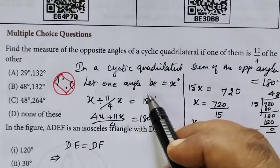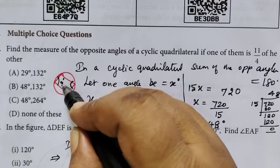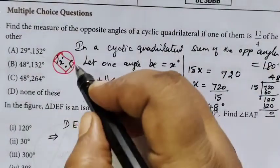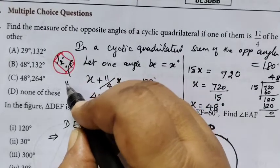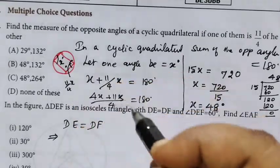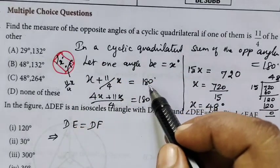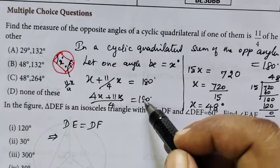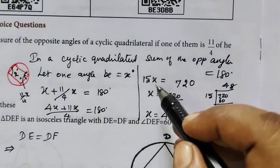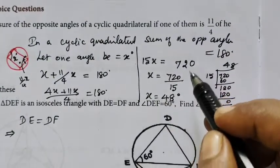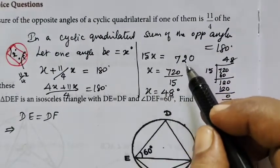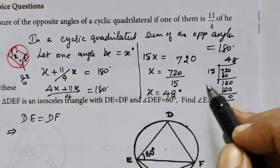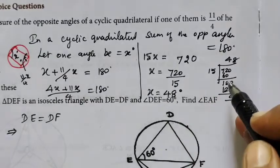Let one angle be x. Then the other angle is 11 by 4 of x. Using the property, we cross multiply: x plus 11x/4 equals 180, giving us 15x equals 720 by 15. When we divide, we get 48 degrees.